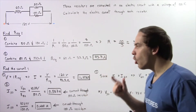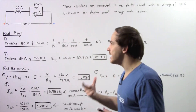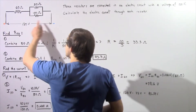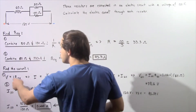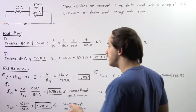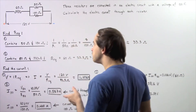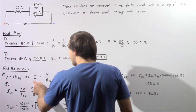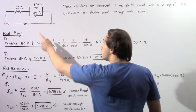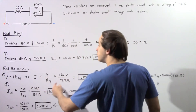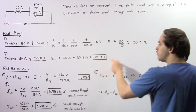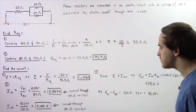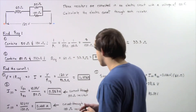Now in step two, we want to calculate the total electric current found in our electric circuit. So we use Ohm's law. The voltage across our battery is equal to the product of the total electric current I multiplied by the equivalent resistance. Solving for I: I is equal to the voltage of 120 volts divided by the equivalent resistance of 93.3 ohms, which gives us about 1.286 amps as our total electric current.